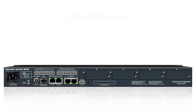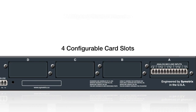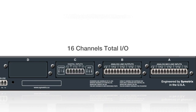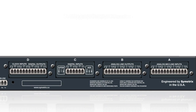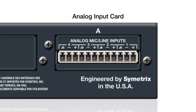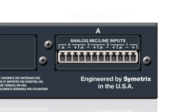A single Edge frame has four configurable card slots, providing up to a total of 16 channels of local I/O. The analog input card provides four channels of mic line input with +48 volts phantom power, 54 dB of gain, and 24 dB of trim.